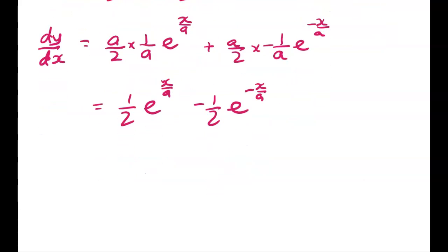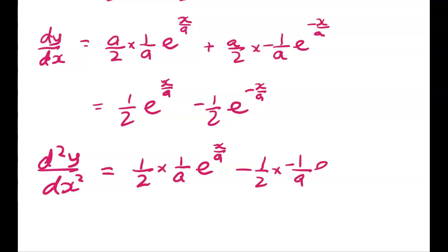Now I'm going to differentiate that again, and then I've got my two building blocks in place to build up to show that that differential equation is satisfied. So the second derivative will be 1 half times 1 over a, e to the x over a, minus 1 half times negative 1 over a, e to the negative x over a.